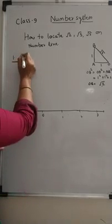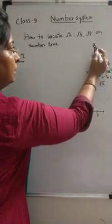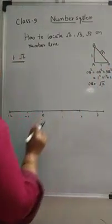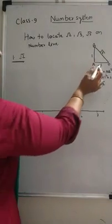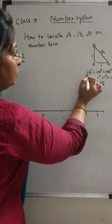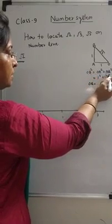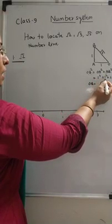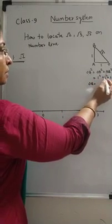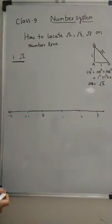First, take root 2. How can we find root 2? Consider a right angle triangle such that its base is 1 unit and perpendicular is 1 unit. By Pythagoras theorem, OB squared is equal to OA squared plus AB squared, which is 1 squared plus 1 squared, equal to 2. So OB is equal to root 2.